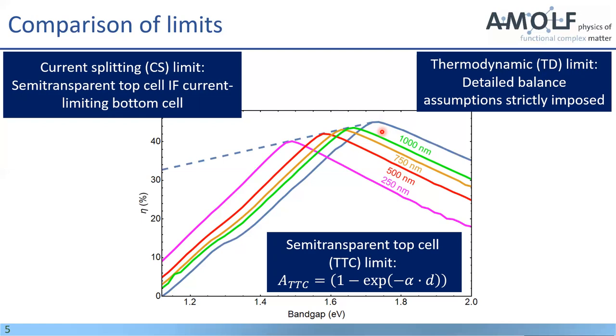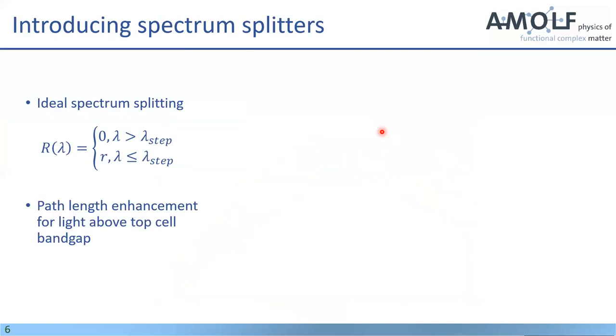So what do you do if your perovskite that you have is slightly too large in band gap for the ideal case? Well, that's when you introduce the spectrum splitter, as we said earlier. So now basically what we're suggesting is to use the spectrum splitter that has the following property. So it's at the interface between your perovskite and silicon, and it reflects nothing if the wavelength of interest is above a certain threshold wavelength, which is usually around the band gap. And it reflects a certain amount if your wavelength is smaller than the threshold wavelength.